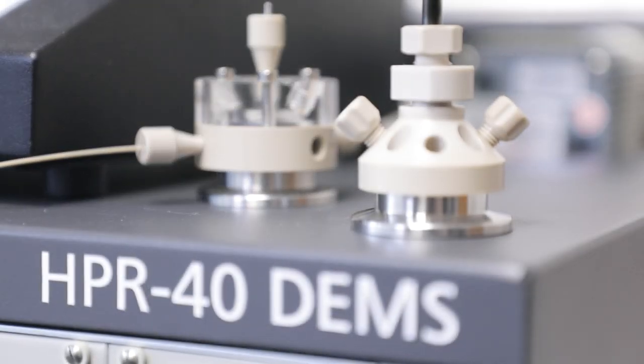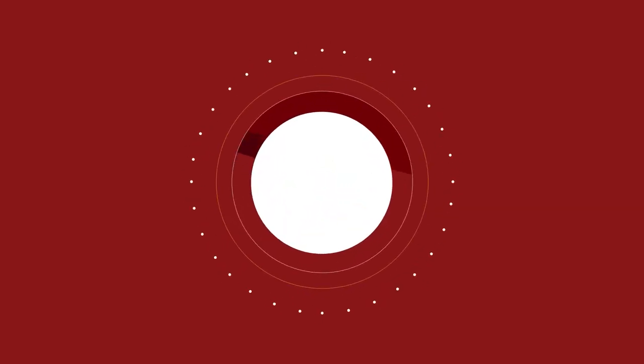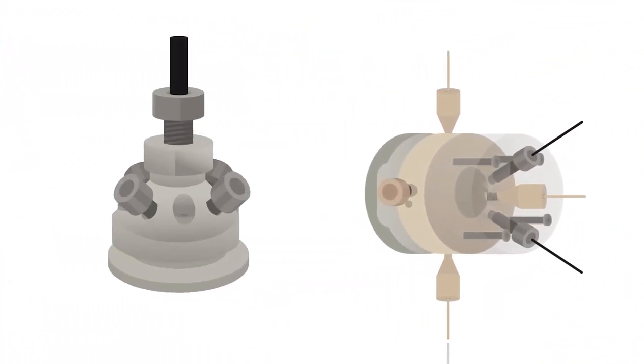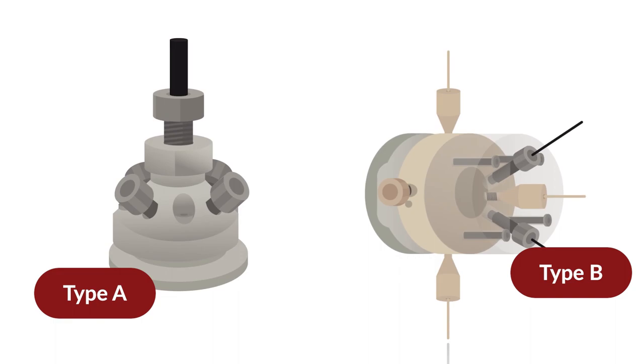The system includes two DEMS cell inlets: type A, designed for materials and catalysis studies, and type B, for electrochemical reaction studies.